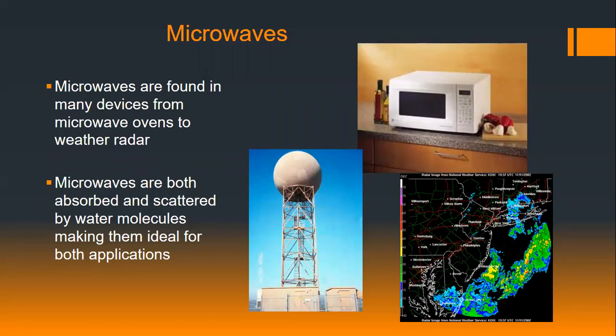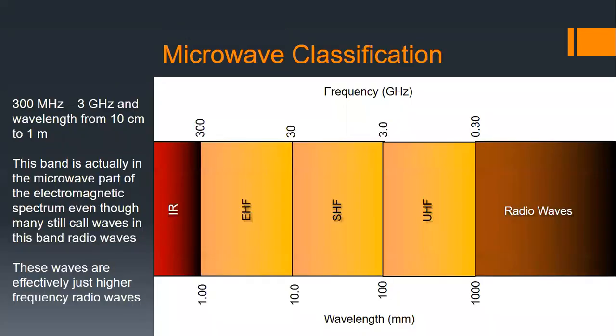Microwaves are not all that different from radio waves — just slightly smaller in wavelength and slightly higher in frequency. The applications for microwaves also include communication. But because microwaves interact with water molecules very easily, they're also used in weather radar and microwave ovens, where the water molecules absorb the microwaves and convert them to heat. Here are the different parts of the microwave spectrum: UHF (ultra high frequency), SHF (super high frequency), and EHF (extremely high frequency).